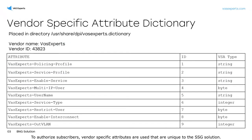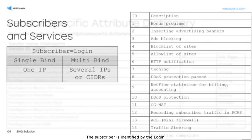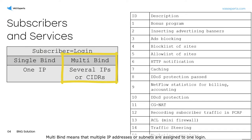To authorize subscribers, vendor-specific attributes are used that are unique to the SSG solution. You need to connect the dictionary, which is available after installation in the directory. The subscriber is identified by the login. There are two types of login and IP bundles: single-bind means one IP address is assigned to one login, and multi-bind means multiple IP addresses or subnets are assigned to one login. Assigning services and policies to a login means applying them to all IP addresses associated with that login.